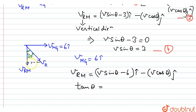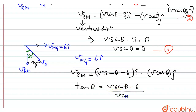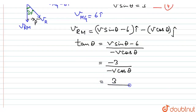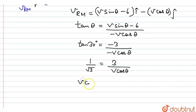I can also write tan theta in this triangle. The perpendicular equals the horizontal component v sine theta minus 6, and the base equals the vertical component v cos theta. Substituting v sine theta from equation 4 gives us minus 3. The angle is 30 degrees, so tan 30 equals 1 over root 3. Solving, I get v cos theta equals 3 root 3. Mark this as equation number 5.